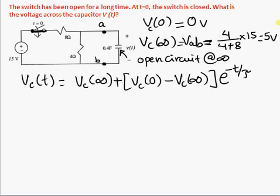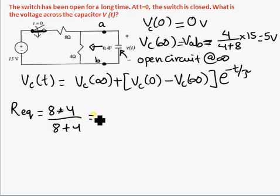Now we have all the things that we need, except for tau. So let's figure out what tau is. Tau can be calculated by figuring out what the equivalent resistance is. And that equivalent resistance is the Thevenin resistance seen by this capacitor. To do that, we short the voltage source. That makes 8 ohms and 4 ohms in parallel. So we have 8 ohms times 4 divided by 8 plus 4, which is 8 times 4 is 32, divided by 12, which comes out to be 2.667 seconds.